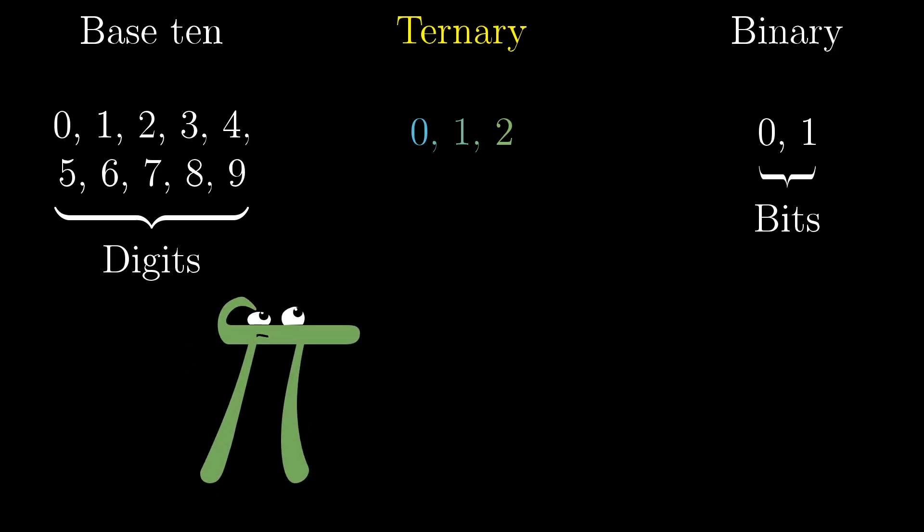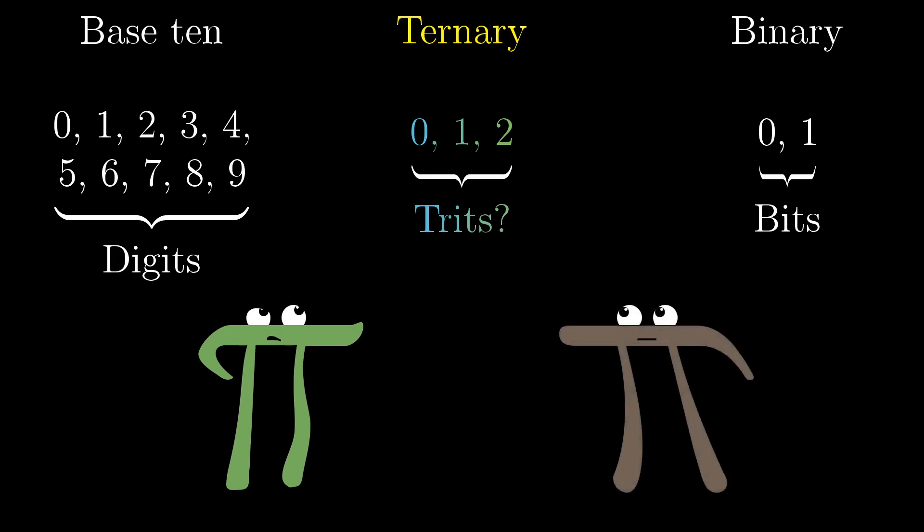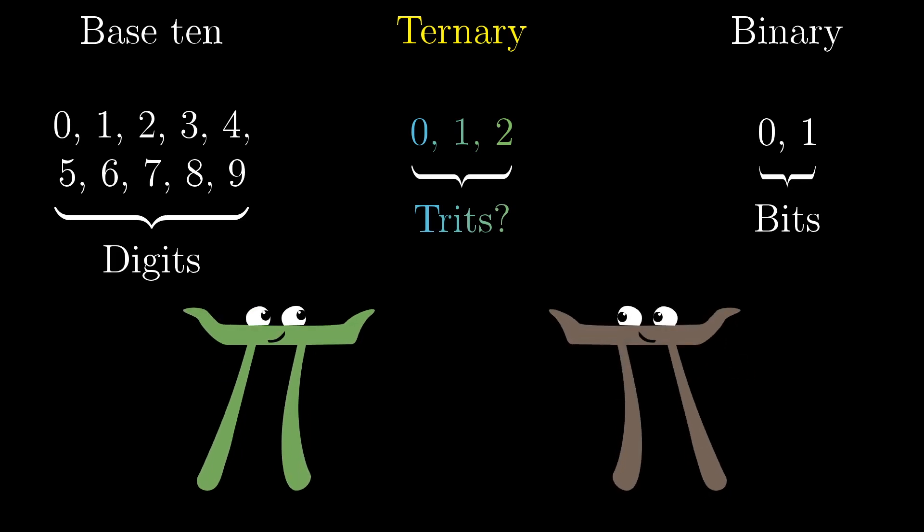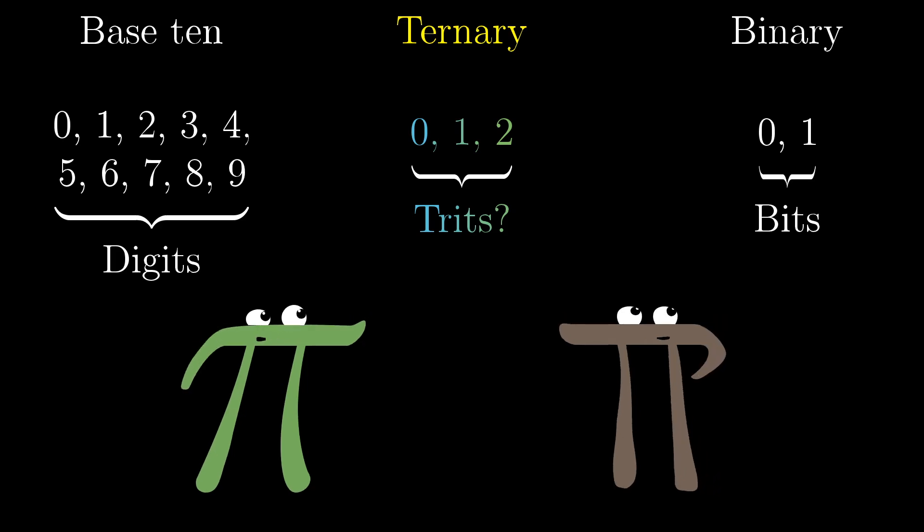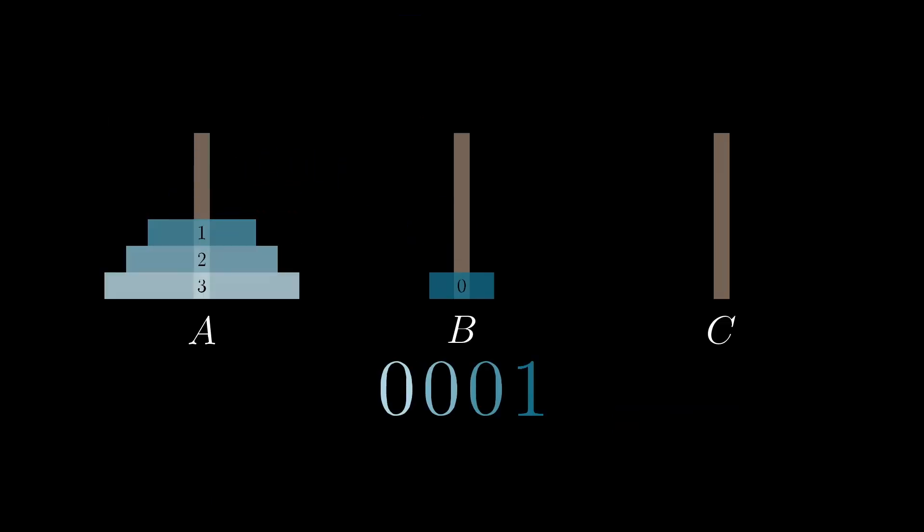I don't even know what you call them, so it's not a bit, it's not a digit. Is it a trit? They are indeed called trits. But if that sounds a little bit off to you, just ask a French speaker how they feel about our convention of calling binary digits bits. Anyway, back to what we were doing, let's think about the rhythm of counting in ternary.